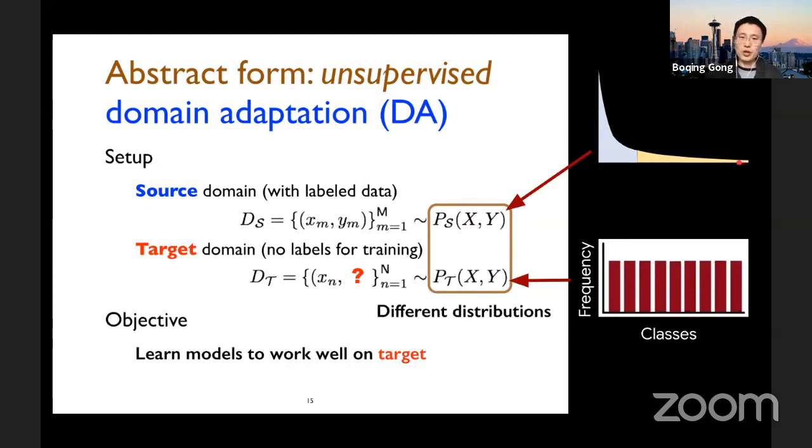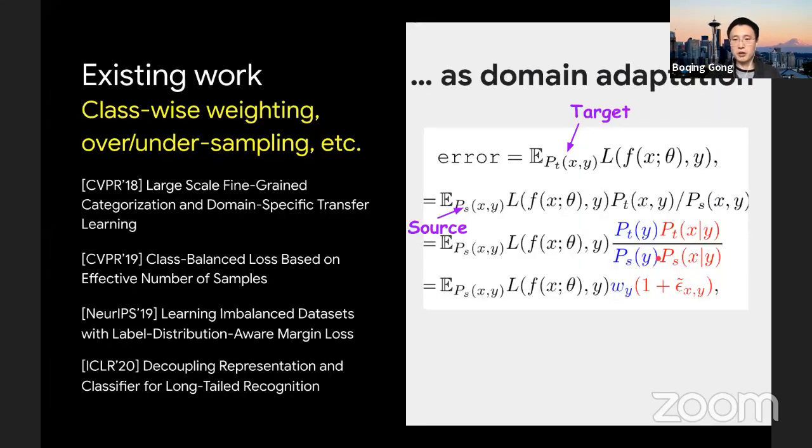So I therefore went back to the old equations in domain adaptation, which I studied during my PhD program, and try to understand this long tailed recognition from the domain adaptation perspective. So we got a long tailed training set. Of course, the tail here is over classes. But we don't want the model to be unbiased. We want the model to be high quality, high performing actually over all classes. So in other words, we expect a balanced or roughly balanced testing set for the model.